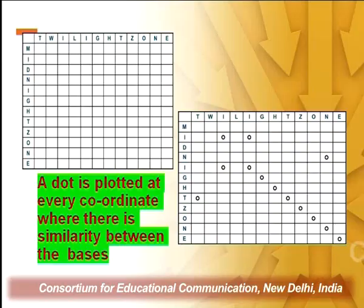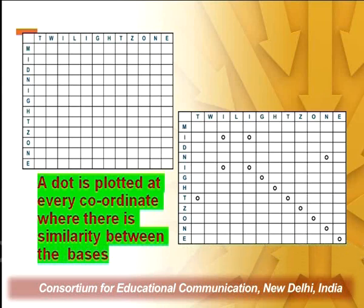How does it look? One sequence is used as a row and one as a column. We plot a dot wherever the residues at the corresponding coordinates are the same. These dots carry very important meanings and information, as the following examples show.